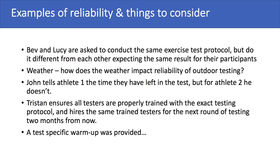You could not compare the two test results because one was done in dry conditions and one in wet, slippery, rainy conditions. If weather was poor, you would postpone testing to ensure environmental conditions are the same. The third example: John tells athlete one the time they have left in the test, but for athlete two he doesn't. That's a form of intra-rater variability — he's not being consistent in providing verbal instruction, which is a form of measurement error that will affect the results.